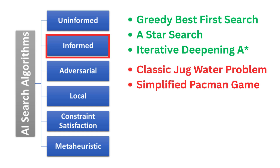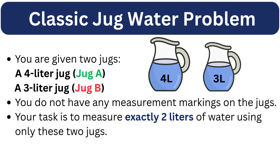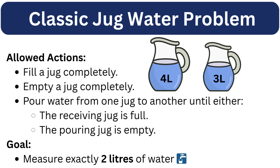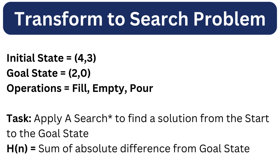The two examples are the water jug problem and the Pac-Man maze problem. In the water jug problem, imagine you have two jugs: a 3-liter jug and a 4-liter jug. You don't have any measurement markings and your goal is to measure exactly 2 liters using only these two jugs. The allowed actions are: fill a jug completely, empty a jug completely, or pour water from one jug to another until either the receiving jug is full or the pouring jug is empty.